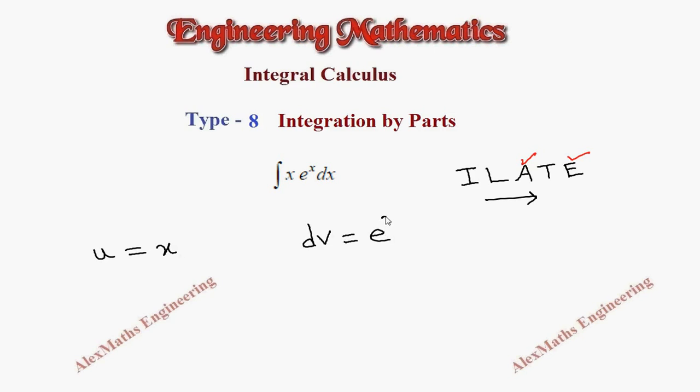What comes second is taken as dv, which is e^x dx. From u we have to find its differentiation du, which is dx. From dv we have to find v by integration. Integration of e^x dx is e^x.